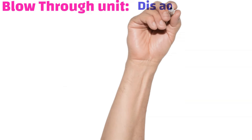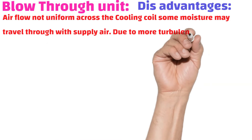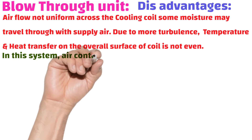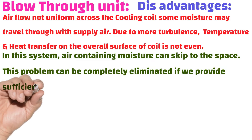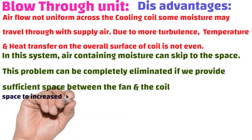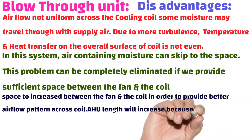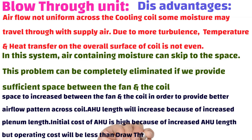Disadvantages of the blow through unit: Airflow is not uniform across the cooling coil. Some moisture may travel through with the supply air. Due to more turbulence, temperature and heat transfer on the overall coil surface is not even. Air containing moisture can escape to the space. This problem can be completely eliminated if we provide sufficient space between the fan and the coil, in order to provide a better airflow pattern across the coil. AHU length will increase because of the increased plenum length, and the initial cost of the AHU is high because of the increased AHU length.